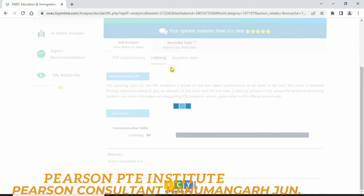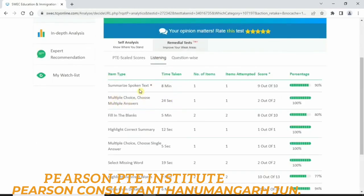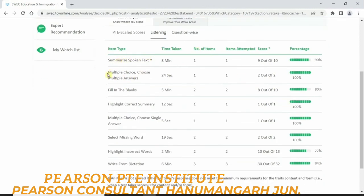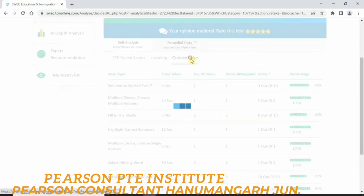All right, so we got 84, so okay, it's a pretty good score. Okay, now let's check what we got in percentage terms in each question type. So summarize spoken text, we got 90% in that question type. Multiple choice, okay, we got them correct, both of them, so it's 100%. Fill in the blanks, okay, something went wrong because we didn't get 100%. We'll see. Highlight correct summary, again it's correct. Multiple choice single answer, they're correct. Select missing word, they're all correct. But we didn't get, we lost the marks in important question. One is here, fill in the blanks, and other highlight incorrect words, and write from dictation. All right, so let's see what we did wrong in those three spaces particularly.